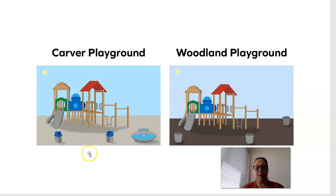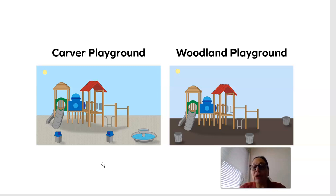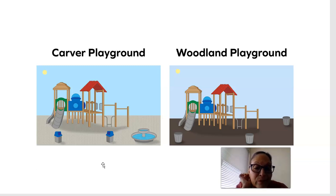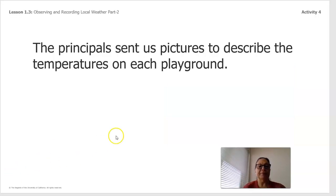Looking at the pictures, they look almost the same. I see the same type of equipment to play with. I see sun. I see one is lighter than the other. Did you notice the same thing? What else do you see that's different? Let's go on further and see what else we have. The principal sent us pictures to describe the temperatures in each playground. Let's take a look at that.